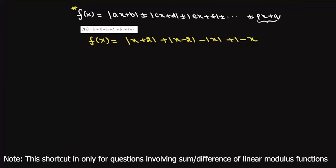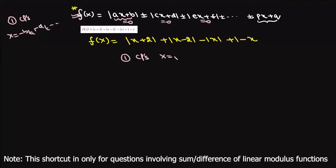In order to draw the graph of such functions, the first step is to find all the critical points. The critical points are where the modulus function changes sign, so we put each expression inside the mod equal to zero. In general, critical points are -b/a, -d/c, etc. For this function, the critical points are -2, +2, and 0. There is no critical point for the simple linear term -x.